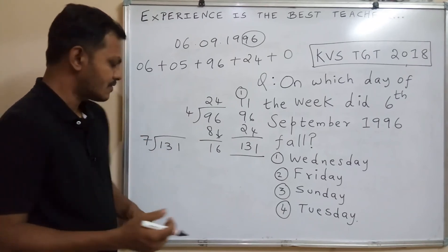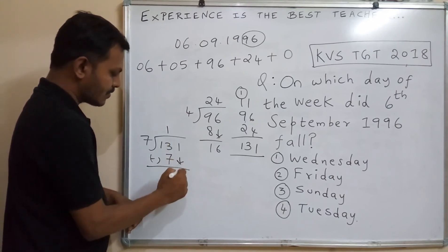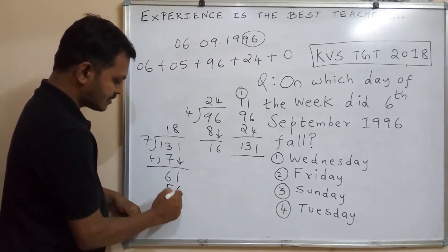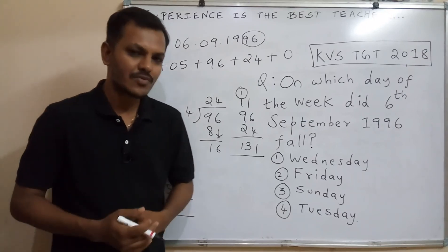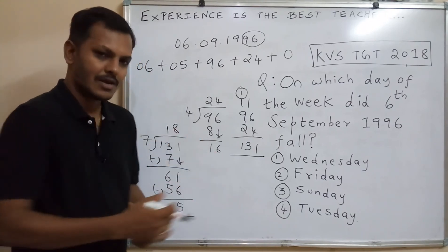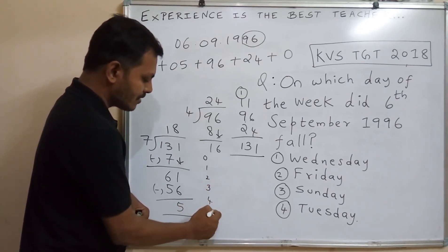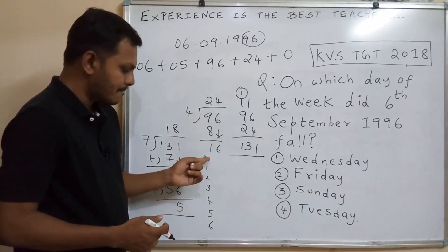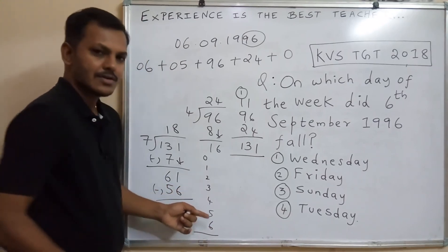So the remainder is 5. Corresponding to the remainder 5, the day is Friday. The number-to-day mapping is: 0 = Sunday, 1 = Monday, 2 = Tuesday, 3 = Wednesday, 4 = Thursday, 5 = Friday, 6 = Saturday. So number 5 is Friday — that is the answer.